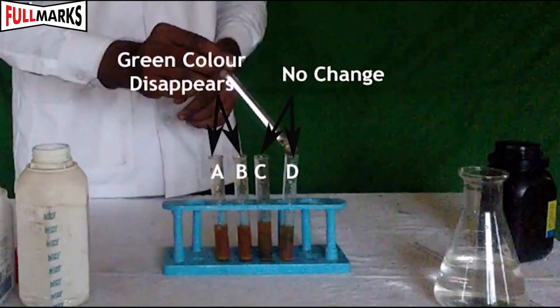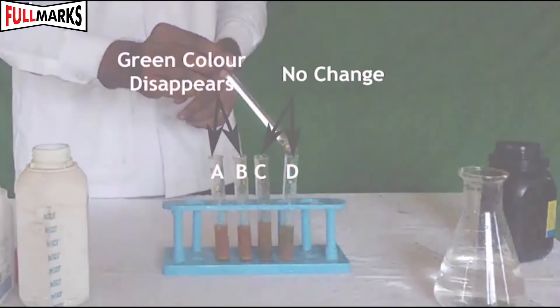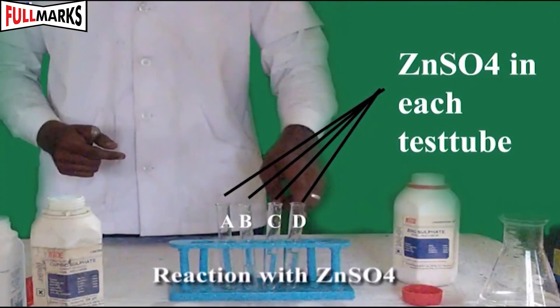In test tube A, the green solution becomes colourless. In test tube B, the green solution also becomes colourless. In C and D, there is no change.